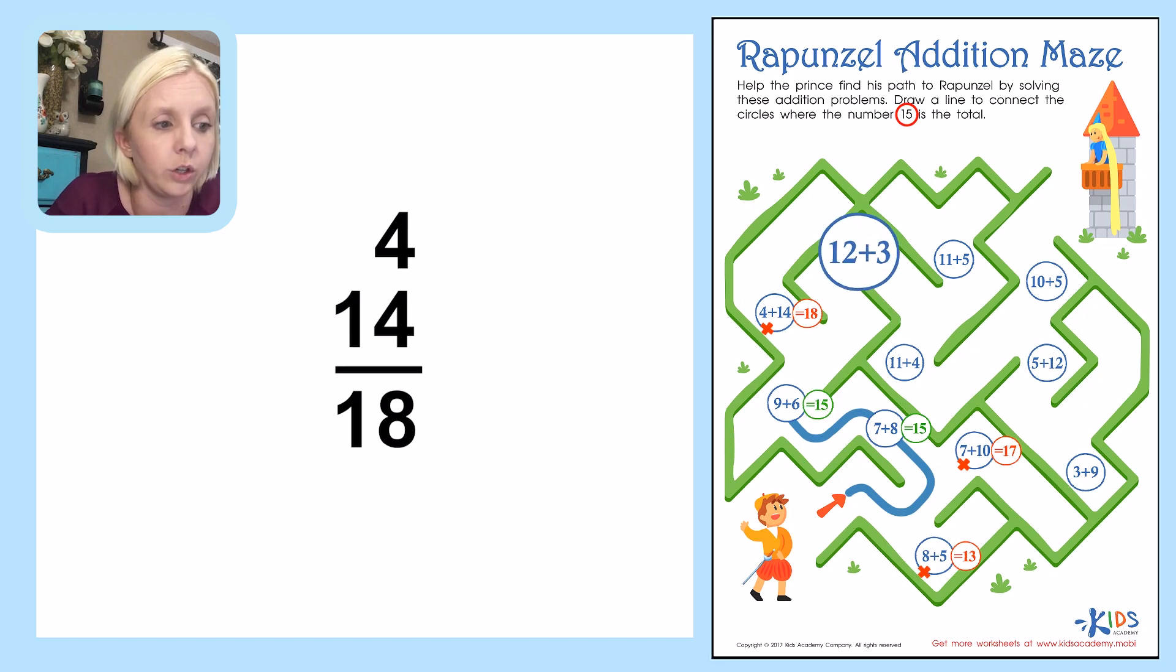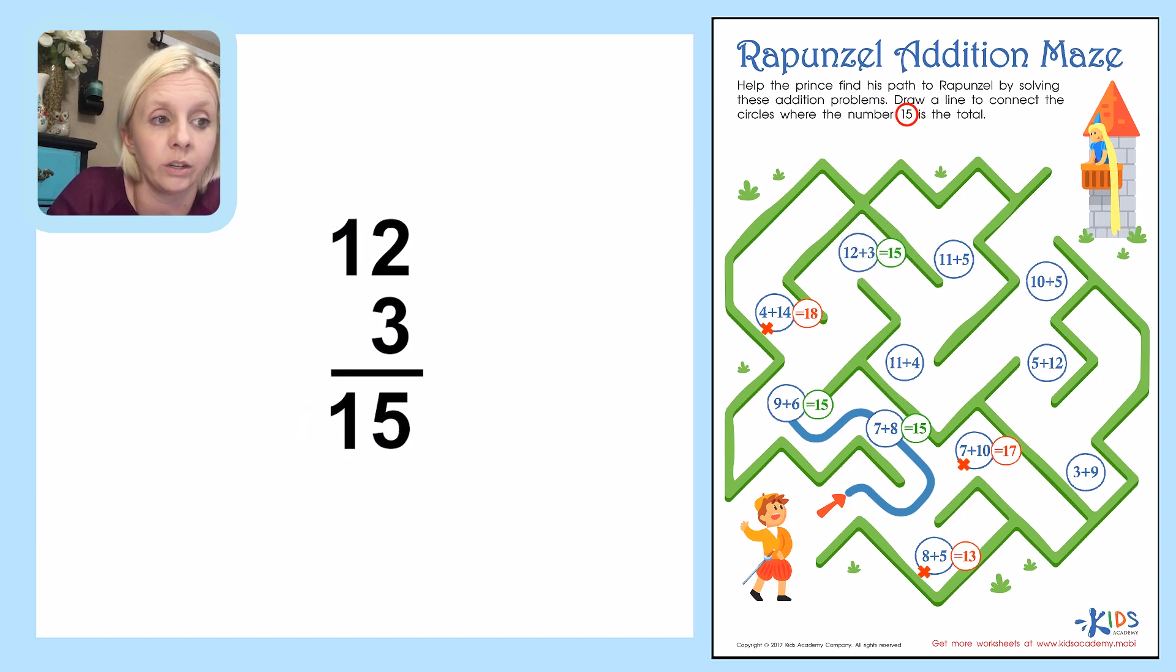So on this one, what I'm going to do is I'm going to add 12 plus 3. I'm going to write this out as an equation. Okay, so 3, 4, 5. Okay, and then bring the 1 down, which is 15. So that is the direction I need to go. So now I'm going to go right over here.